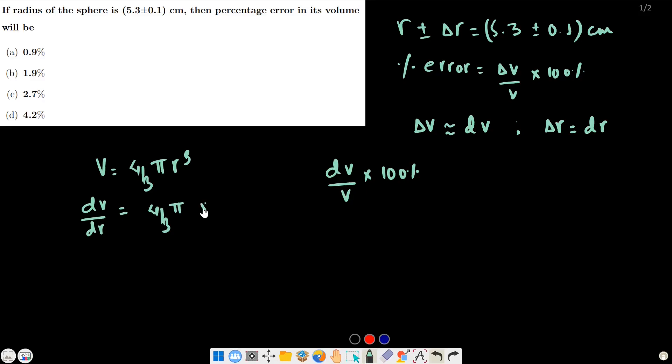dV is equals to 4 by 3 pi into 3 r square dr, which gives us 4 pi r square dr.